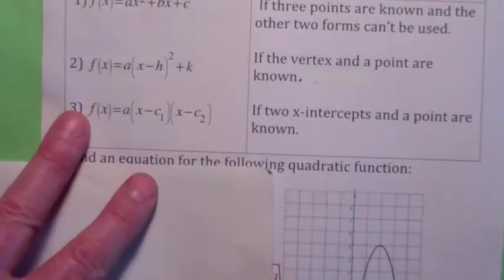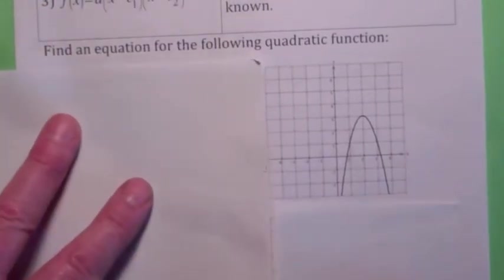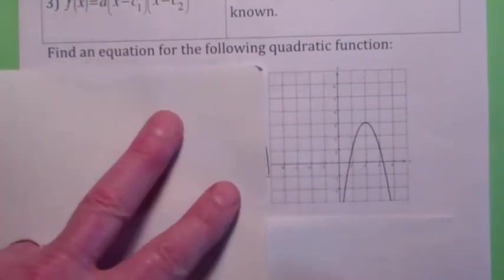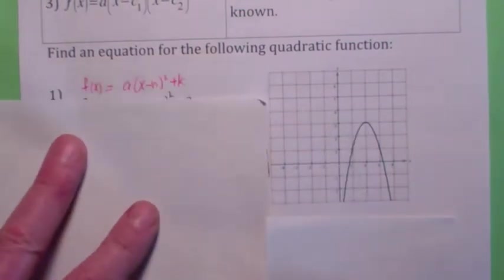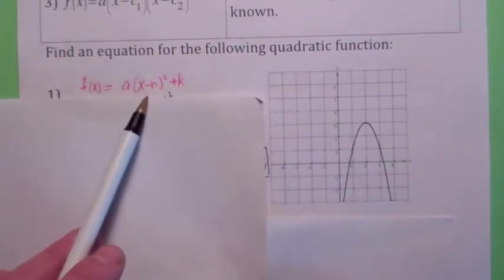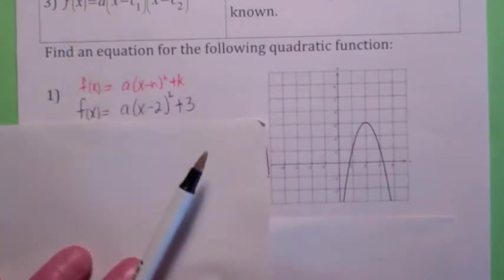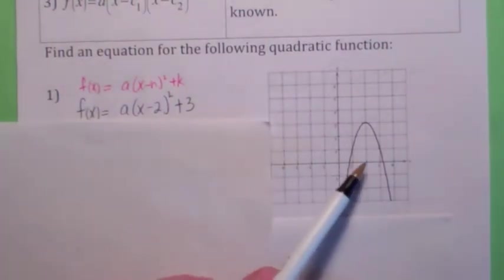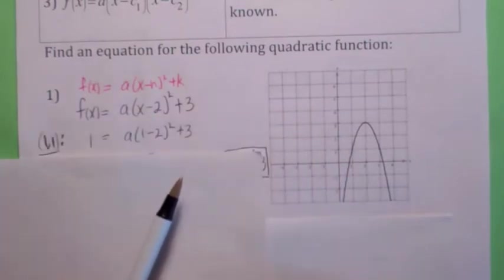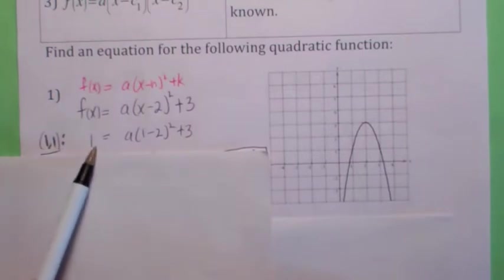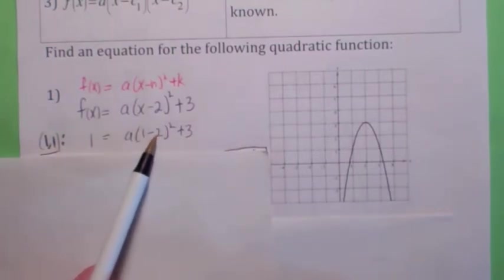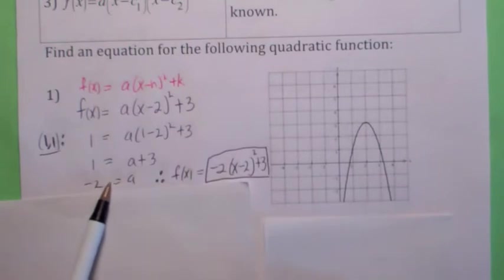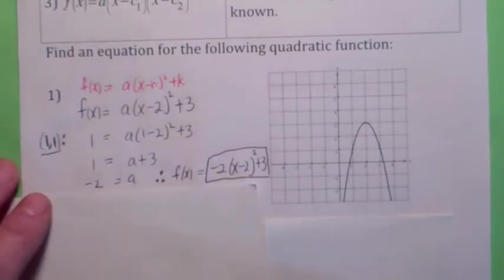Suppose you're given a graph and you want to find the equation of the quadratic function. You know a is going to be negative because it opens down. Since you can read the vertex, you should use the vertex form. The vertex is (2, 3), so h is 2 and k is 3. All you need to do is find a. You read another point — the point (1, 1) looks easy. Plugging in x = 1, y = 1: you get 1 = a(1−2)² + 3, which simplifies to 1 = a + 3, so a = −2. The function is f(x) = −2(x − 2)² + 3.